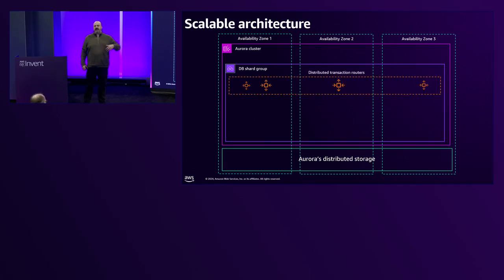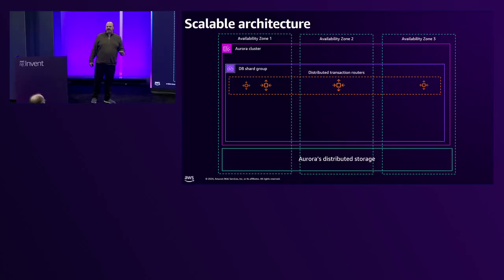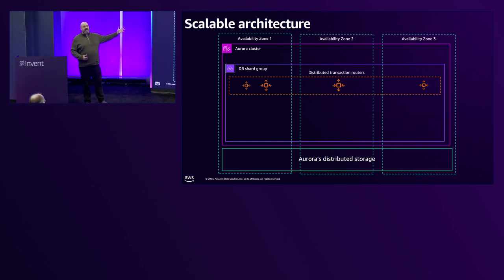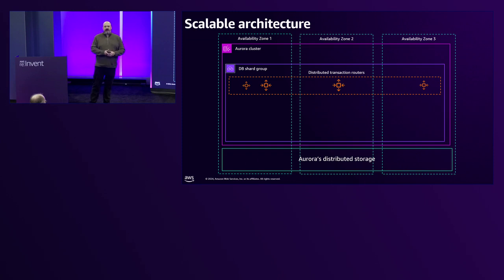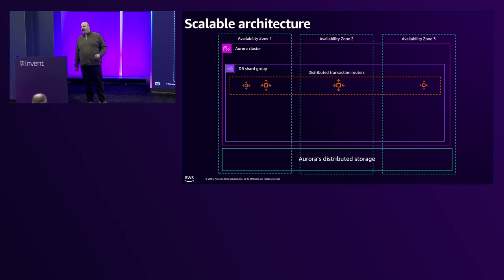Within this shard group, first we create what we call distributed transaction routers — or just routers. This is where all database connections from your clients go. These are not simple proxies — the routers are deep database nodes that do query parsing, planning, and drive the execution. As their name says, they are transaction routers that coordinate the transaction system keeping this entire distributed system giving you a consistent single-system view. The routers are spread across three availability zones so that if one AZ goes down, routers are already present in other AZs.